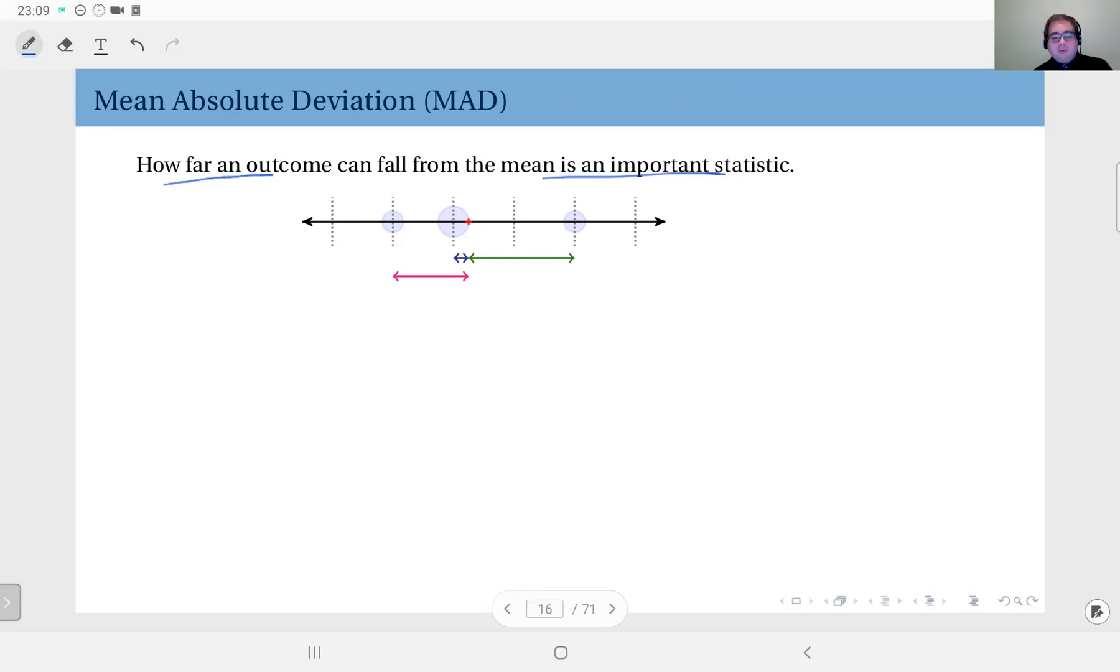So mean absolute deviation is a measure of that. Of course, you do not just subtract the mean value from the outcomes because on average that would be zero from both sides. But what you get is the distance - we call the deviation, but of course it's an absolute deviation so that it's always positive.